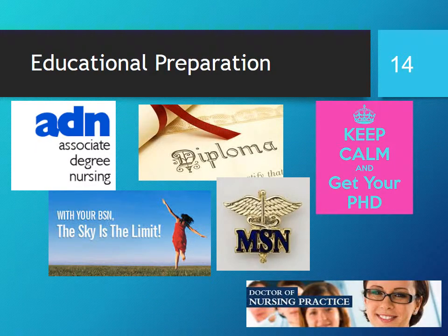Educational preparation. There are currently three entry levels to registered professional nursing: associate degree, baccalaureate degree, and diploma nurse degree. All three of these levels of educational preparation take the same NCLEX exam. Master's degree programs are specific and prepare students for advanced and autonomous nursing practice. The terminal degree is a DNP or PhD — the DNP is generally more practice-based, while the PhD is based in research.